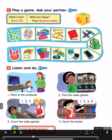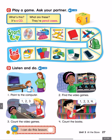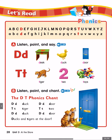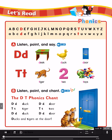Page 27 D. Listen and do. Number 1: Point to the computer. Number 2: Find the video games. Number 3: Count the video games. Number 4: Count the books.